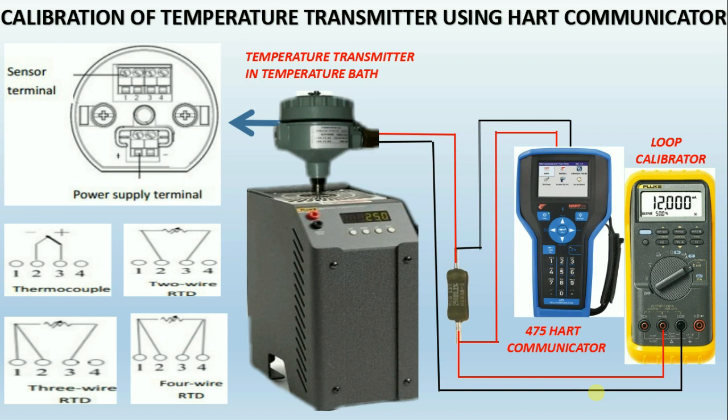After completing the connection, set the zero temperature value in the calibration bath according to the lower range value in HART, and check the corresponding 4 milliamps in the loop calibrator. If it is not showing the corresponding milliamps, then using HART do the lower sensor trim.